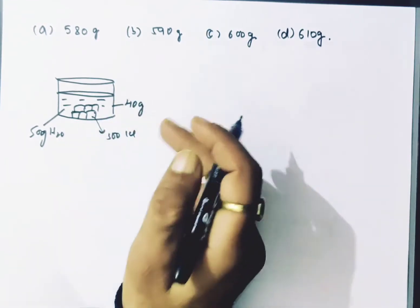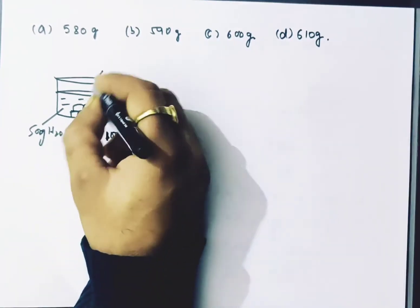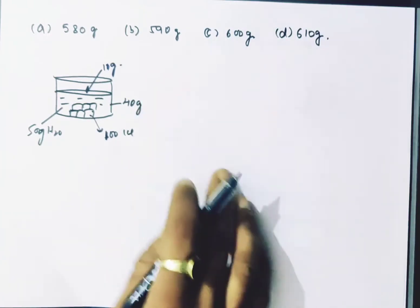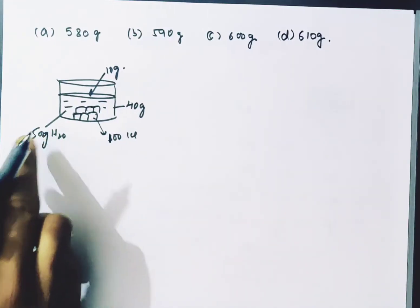Now, 500 grams of water and 100 grams of ice will obviously dominate 10 grams of steam.